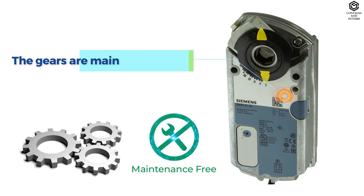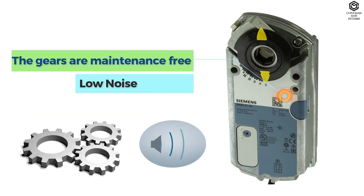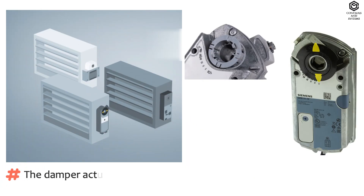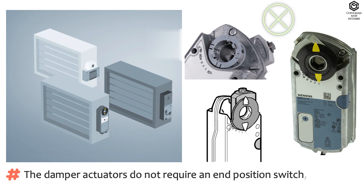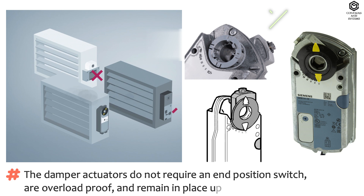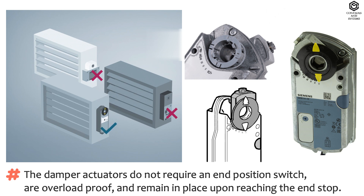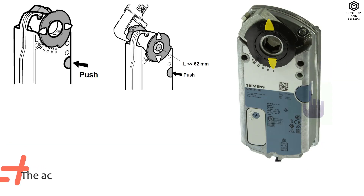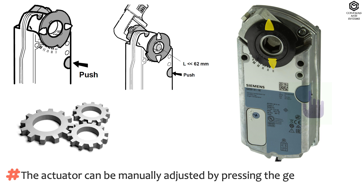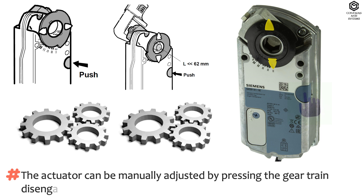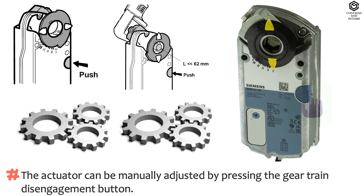The gears are maintenance-free and low noise. The damper actuators do not require an end position switch, are overload proof, and remain in place upon reaching the end stop. The actuator can be manually adjusted by pressing the gear train disengagement button.